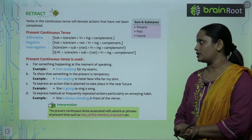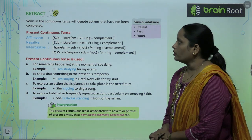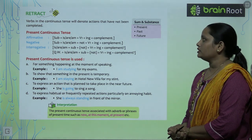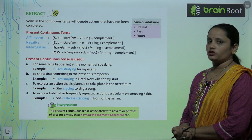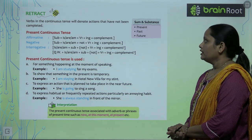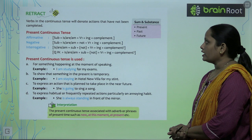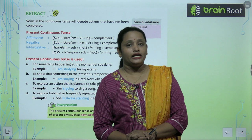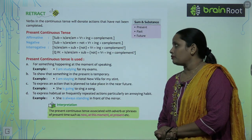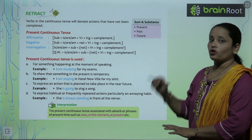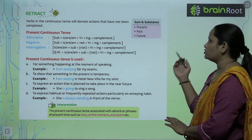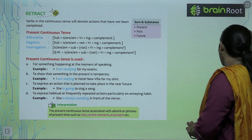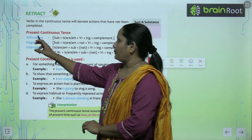In the previous class we learned about Simple Tense. Today we will learn about Continuous Tense. The verb in Continuous Tense denotes action that has not been completed. In this chapter we will learn about Present Continuous Tense, Past Continuous Tense, and Future Continuous Tense.